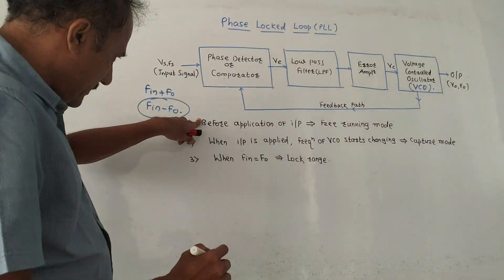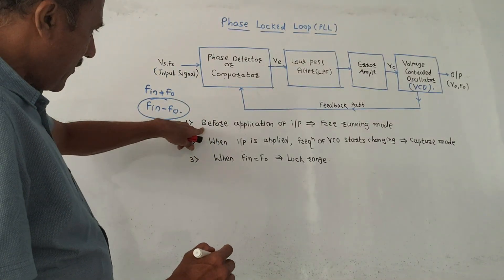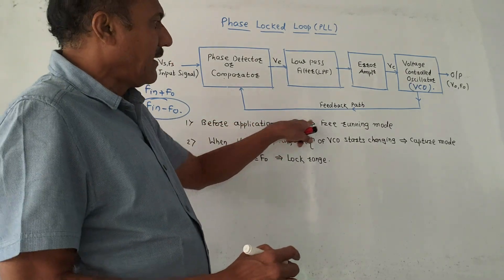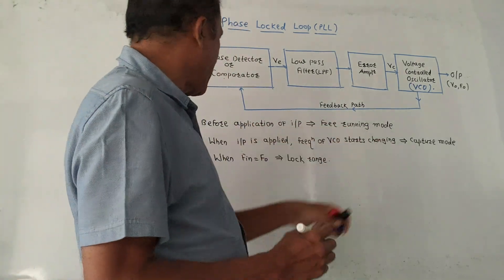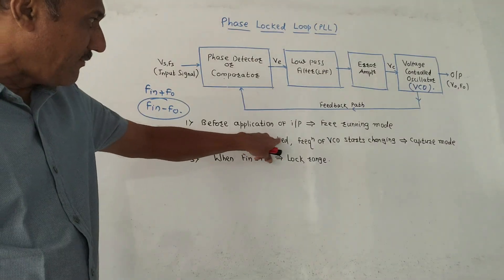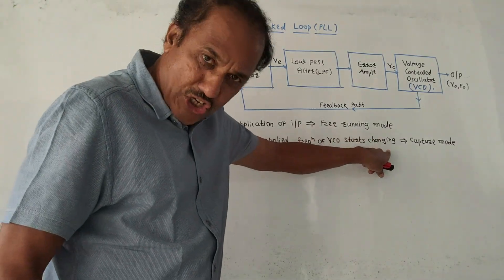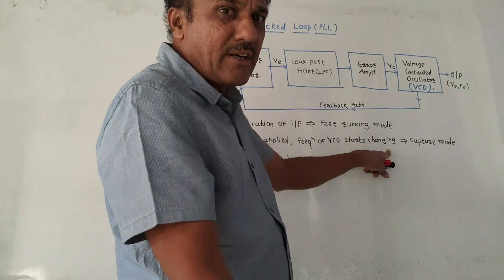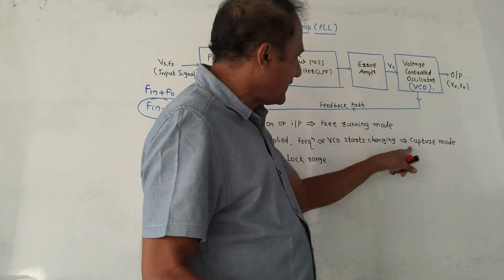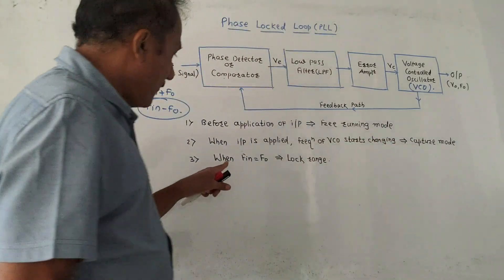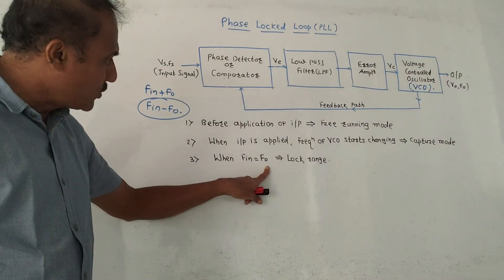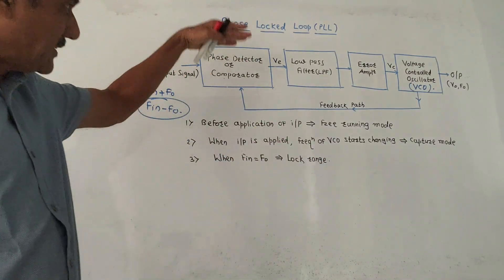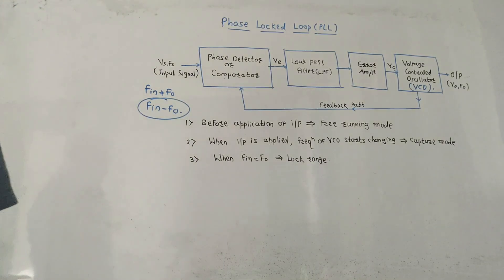To summarize: first, before application of the input signal, it is called free running mode of PLL. When input is applied, the frequency of the VCO starts changing — that means the VCO starts capturing the input frequency — this is called capture mode. When F_in becomes equal to F_0, this is called the lock condition. That is the block diagram of PLL.